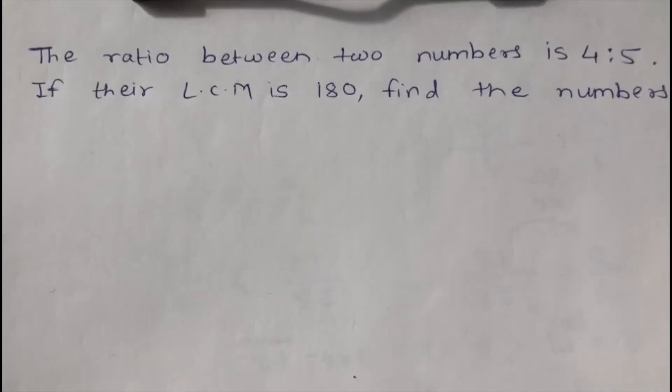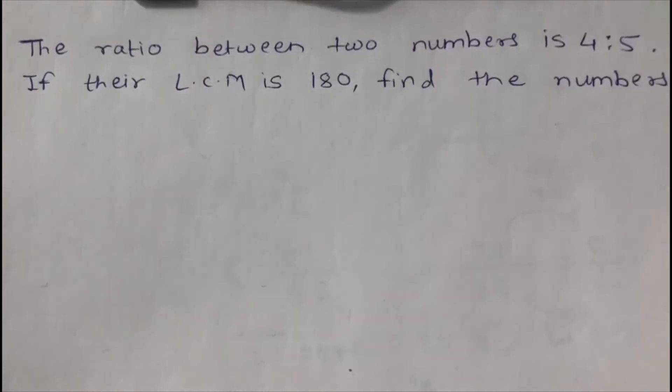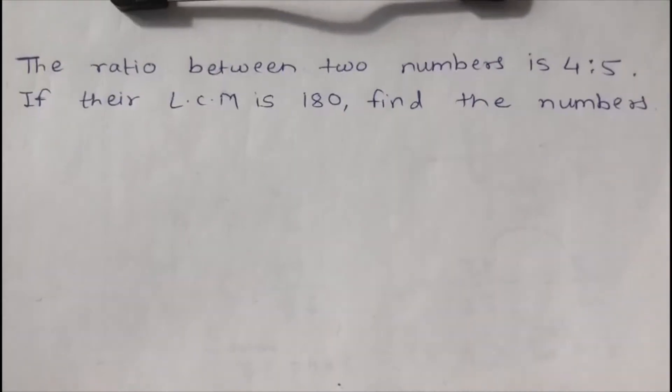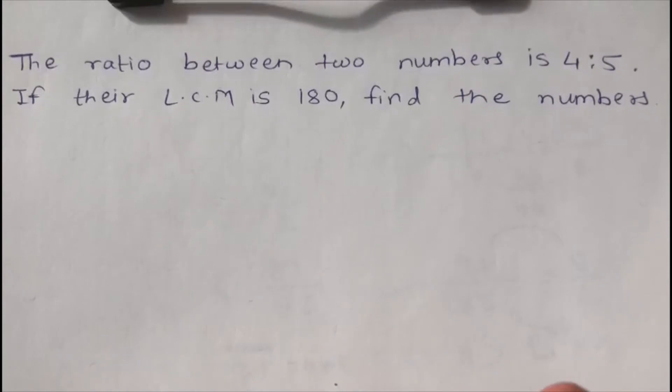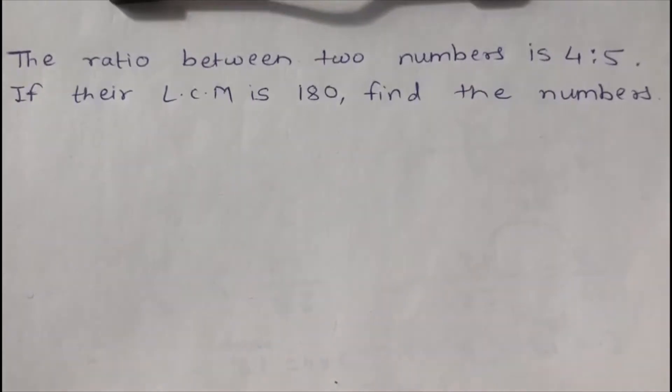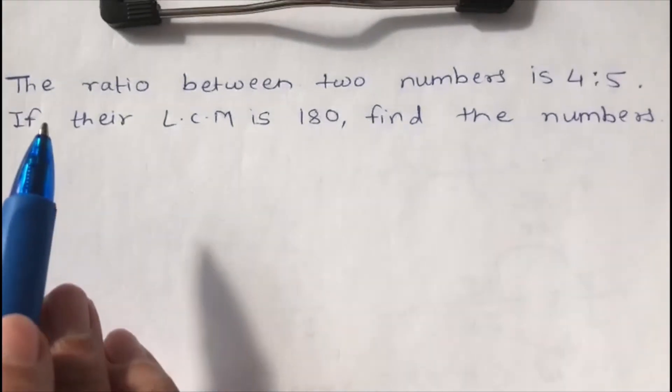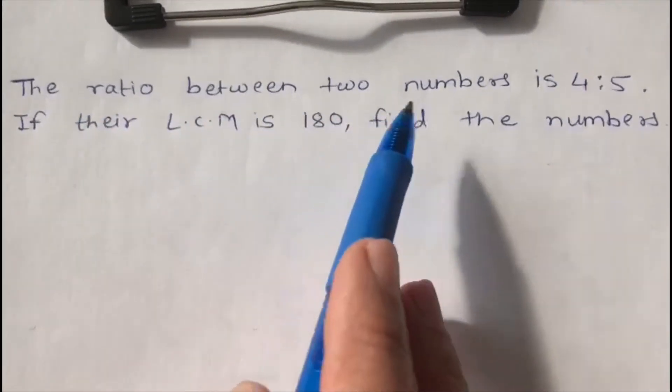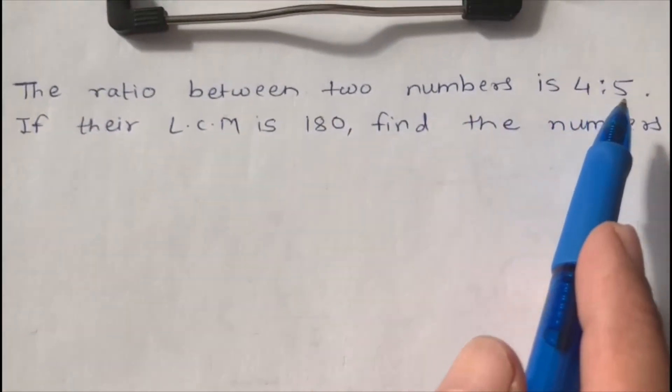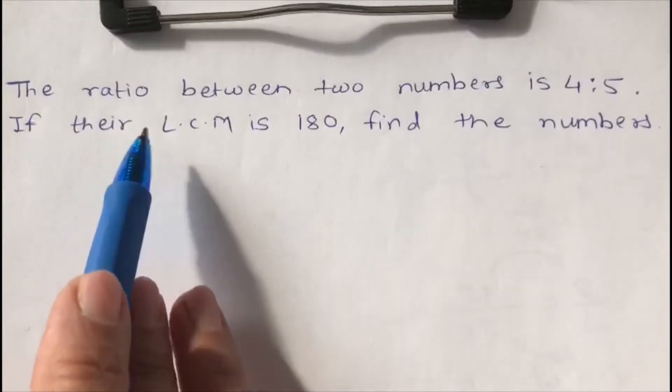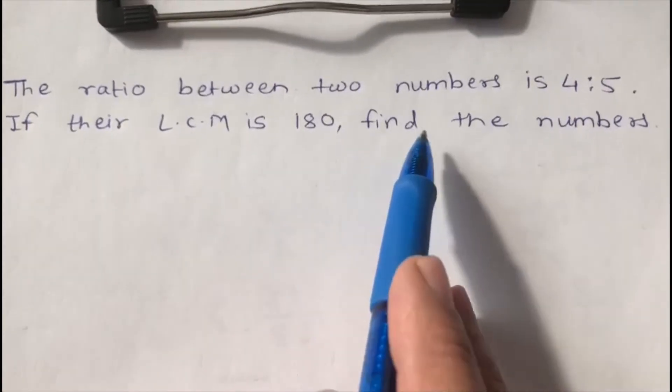Hello friends, today in this video I am going to teach you ratio and proportion shortcuts. If the ratio is given and the LCM or HCF is given, then how to find the numbers. So let's get started. First, read this question: the ratio between two numbers is 4 is to 5, and if their LCM is 180, find the numbers.